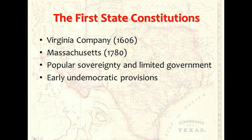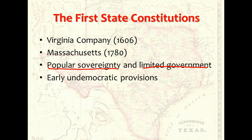Because the first state constitutions came out of the revolutionary period, they shared many of the same features. The doctrines of separation of powers and checks and balances were built into each of the new constitutions. Each also proclaimed the principles of popular sovereignty and limited government. That is, in each of them, the people were recognized as the sole source of authority for government, and in each constitution, the powers given to the new government were closely limited. Seven constitutions began with a lengthy bill of rights. All of them made it clear that the sovereign people held certain inalienable rights that government must respect.